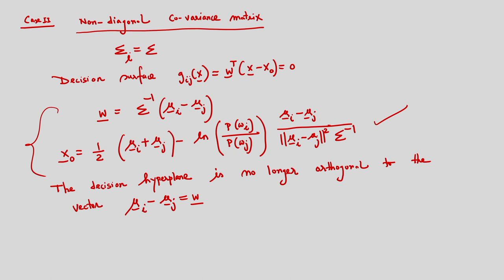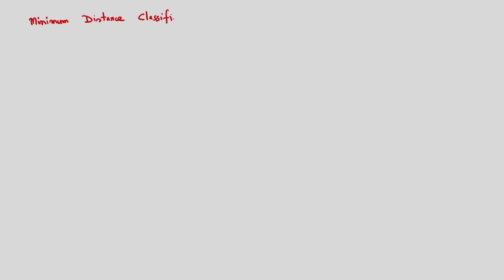This is for case number 2. Now let us consider the classifier called the minimum distance classifier, which is based on the concept of the discriminant function. We will consider equiprobable classes with the same covariance matrix.